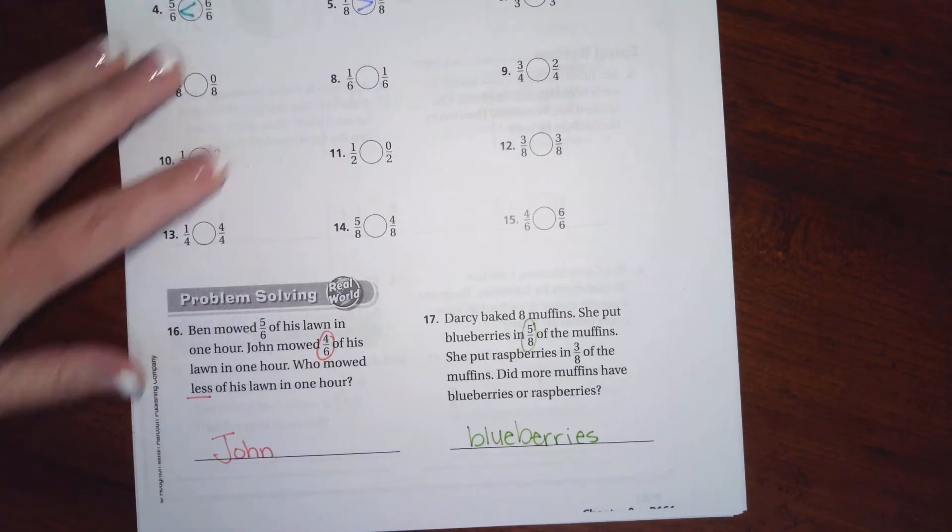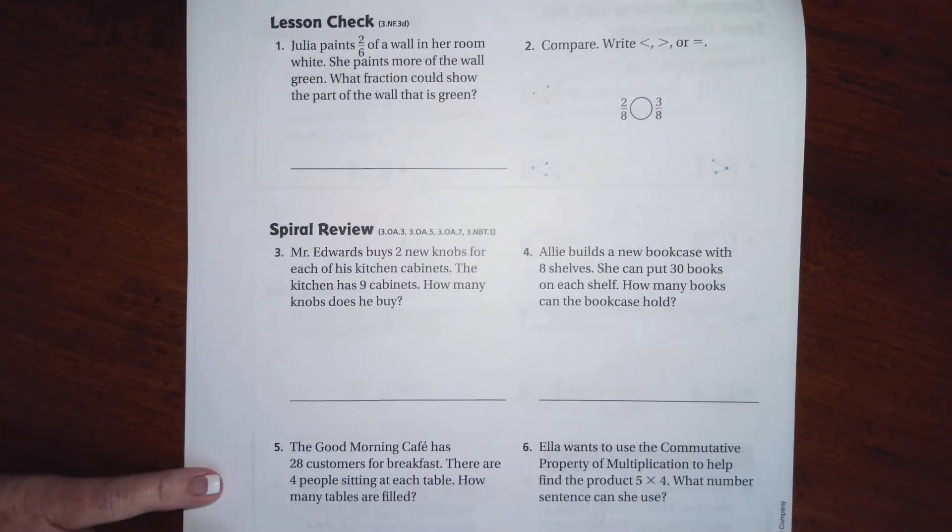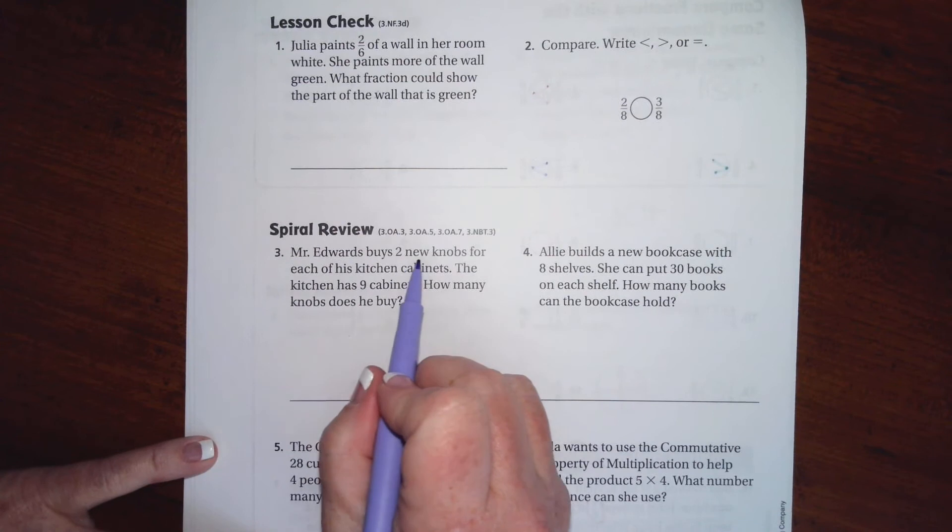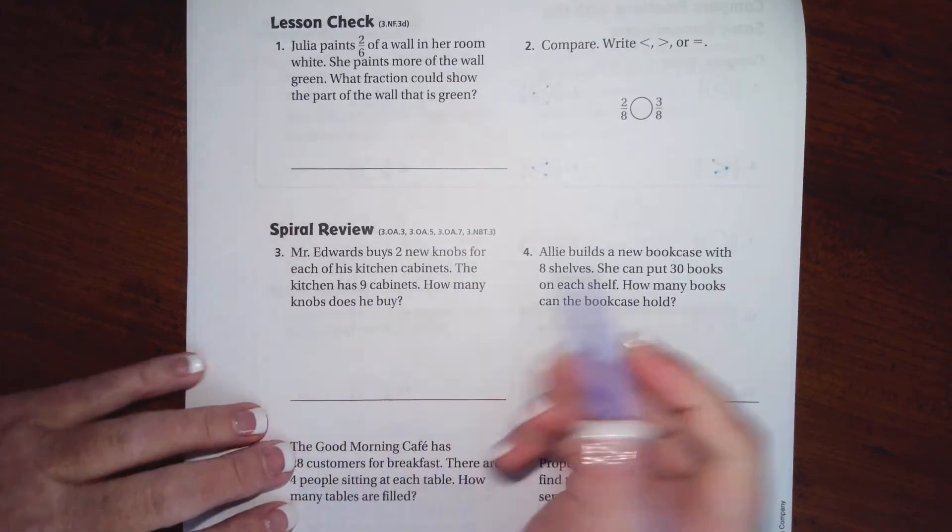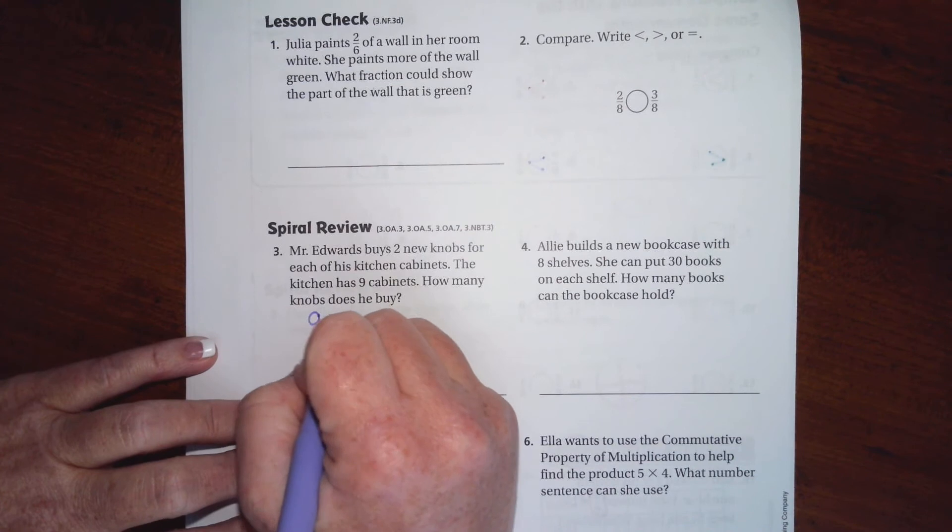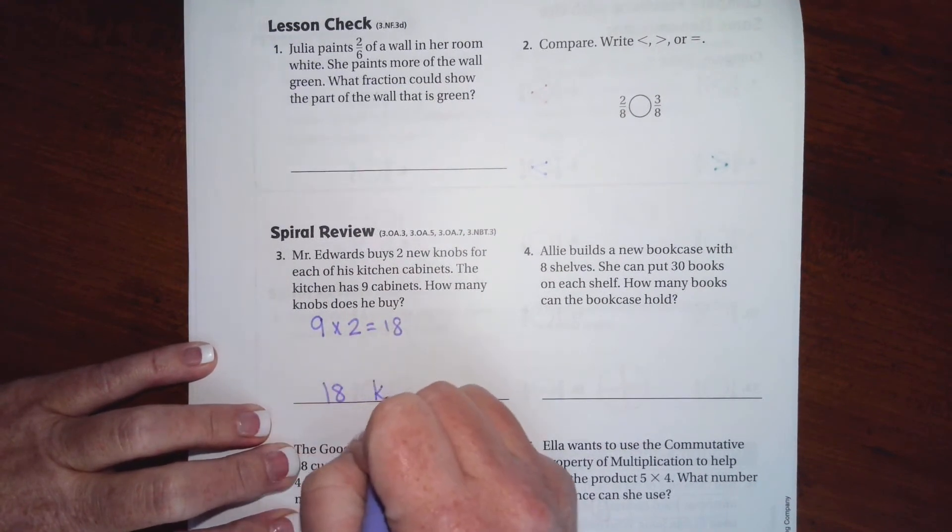All right guys, let's flip over to the back side where you guys are going to do a lesson check just like always, and we are going to go down and do a spiral review. It says Mr. Edwards buys two new knobs for each of the kitchen cabinets. The kitchen has nine cabinets, so nine times two, well that's 18. So 18 knobs.